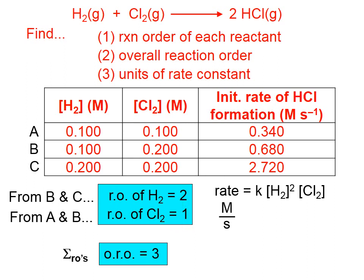Rate is molarity per second. There's our equal sign. Concentration of hydrogen squared would be molarity squared. Concentration of chlorine would be molarity.